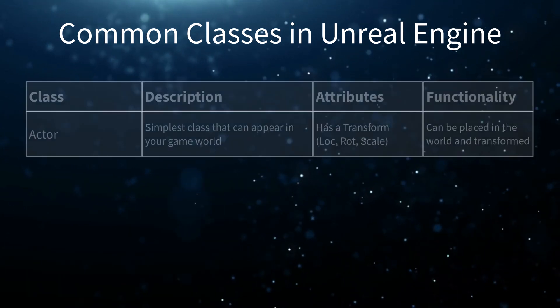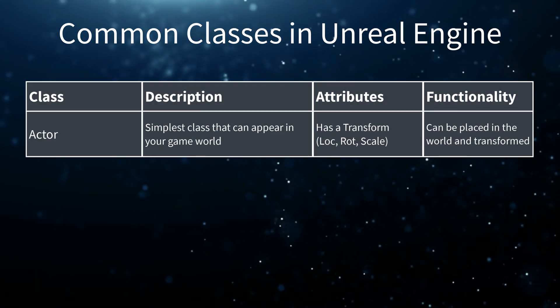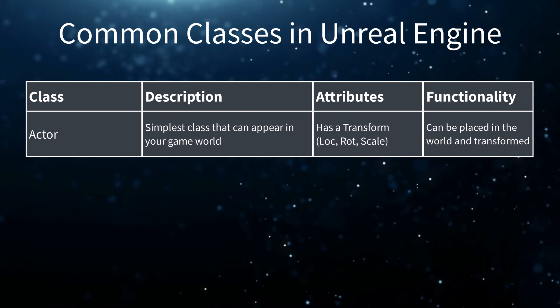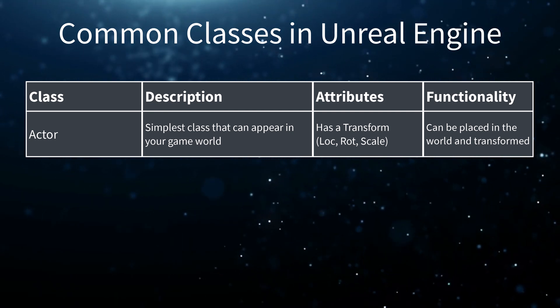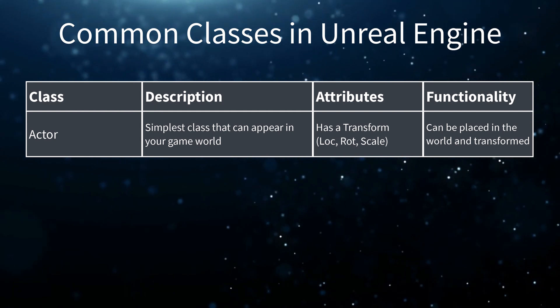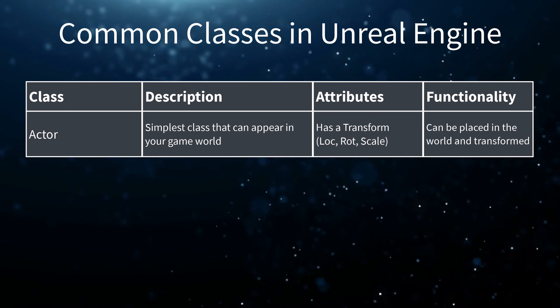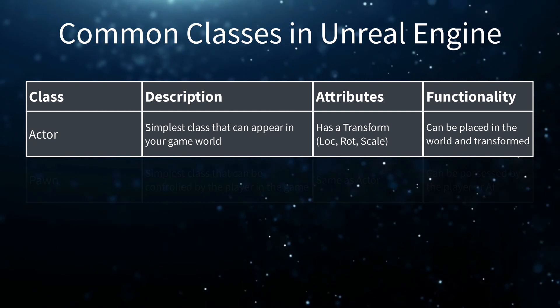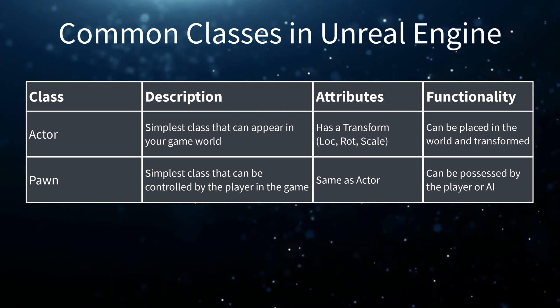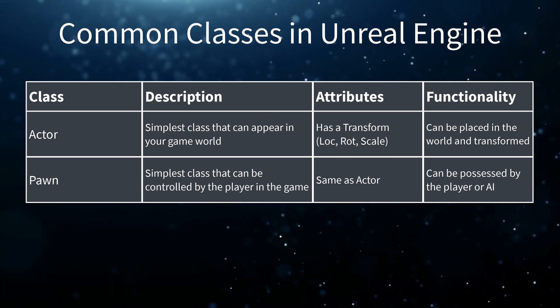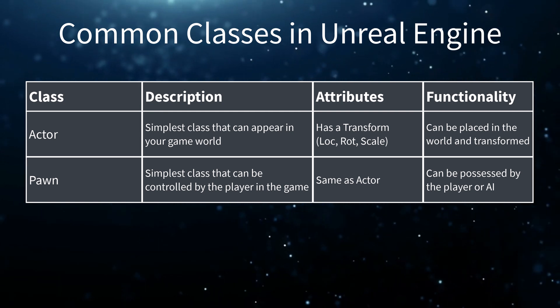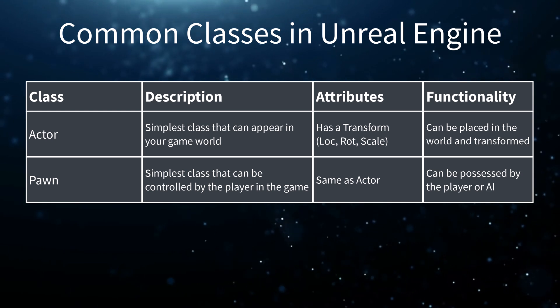The Actor class is the simplest class you can use to place an object in the world. It has a transform as one of its attributes. A transform is a location, rotation, and scale. An Actor can be placed in the world and transformed. The Pawn class is the simplest class that can be possessed or controlled by the player. It has the same attributes as the Actor class, with the added functionality that it can be controlled by a player or AI agent.